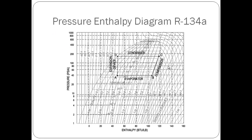The next step, once you have gathered your R134A diagram, is to remember the vapor compression cycle. The cycle starts at point A with the evaporator, which operates at the suction pressure of 40 psi absolute as given. Then it moves to point B where the refrigerant evaporates to a superheated refrigerant vapor with 20 degrees Fahrenheit of superheat.